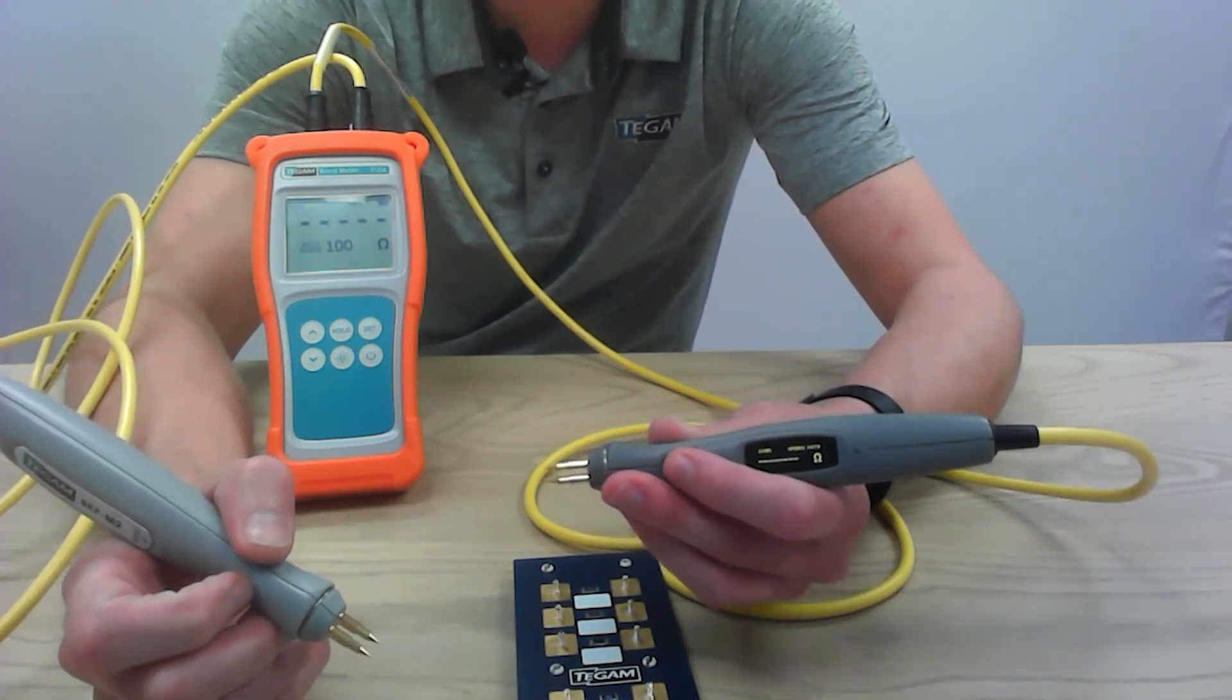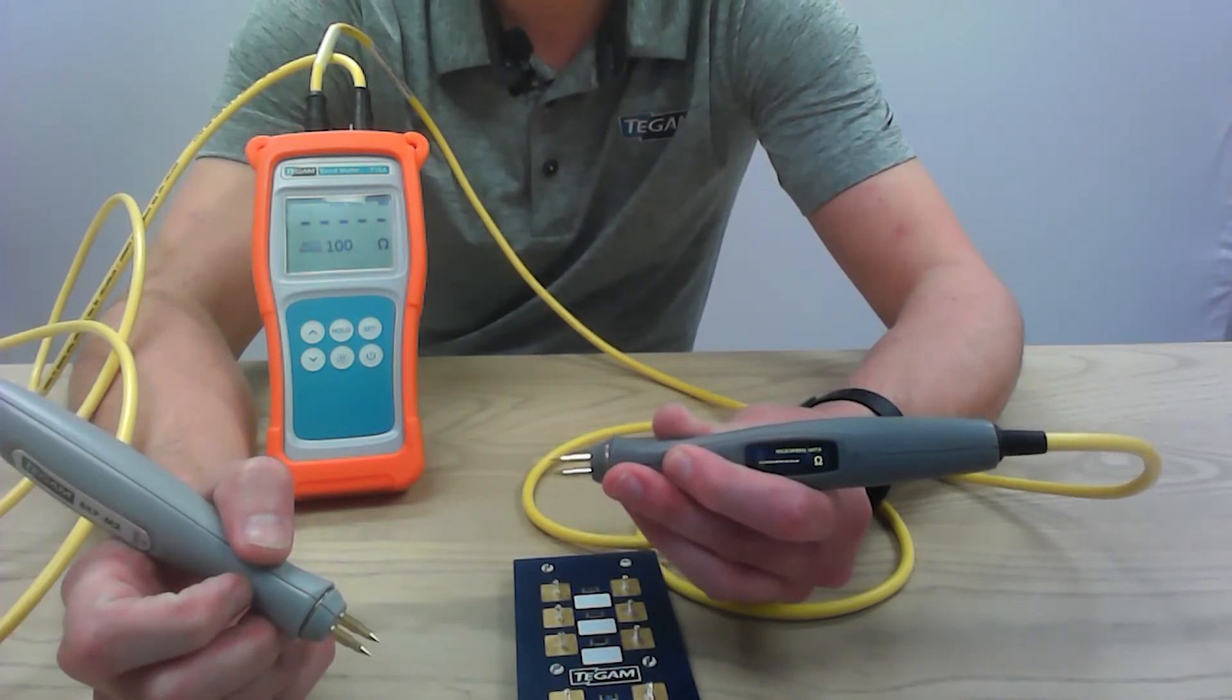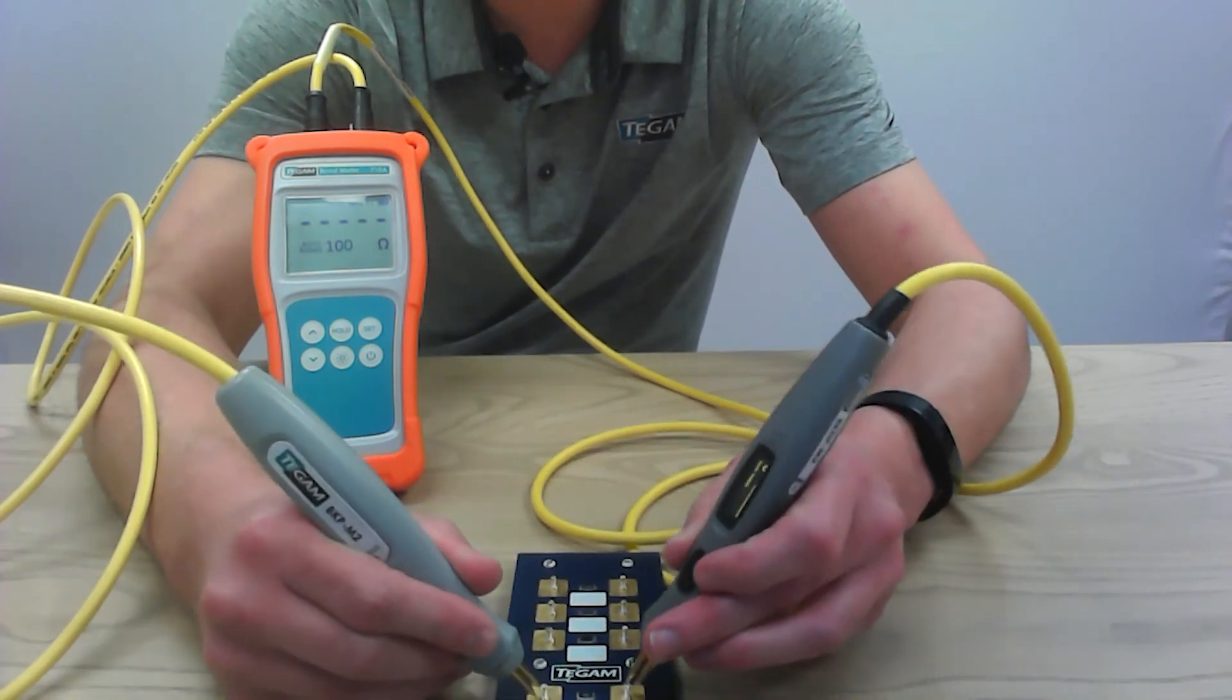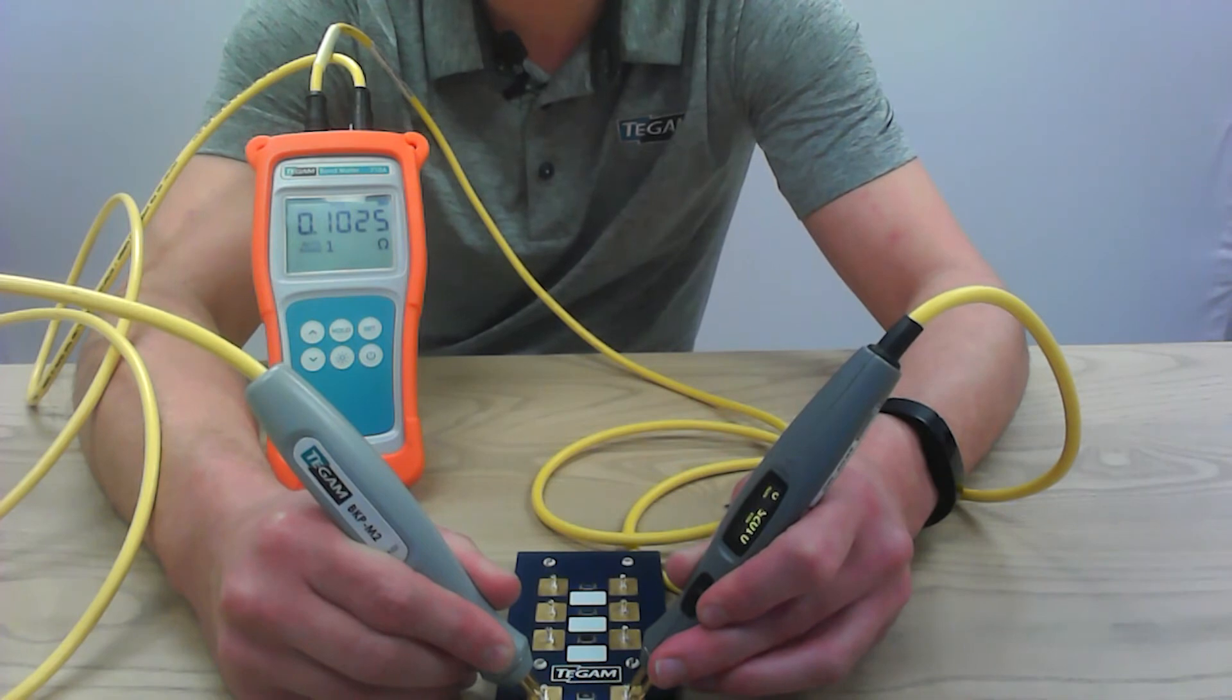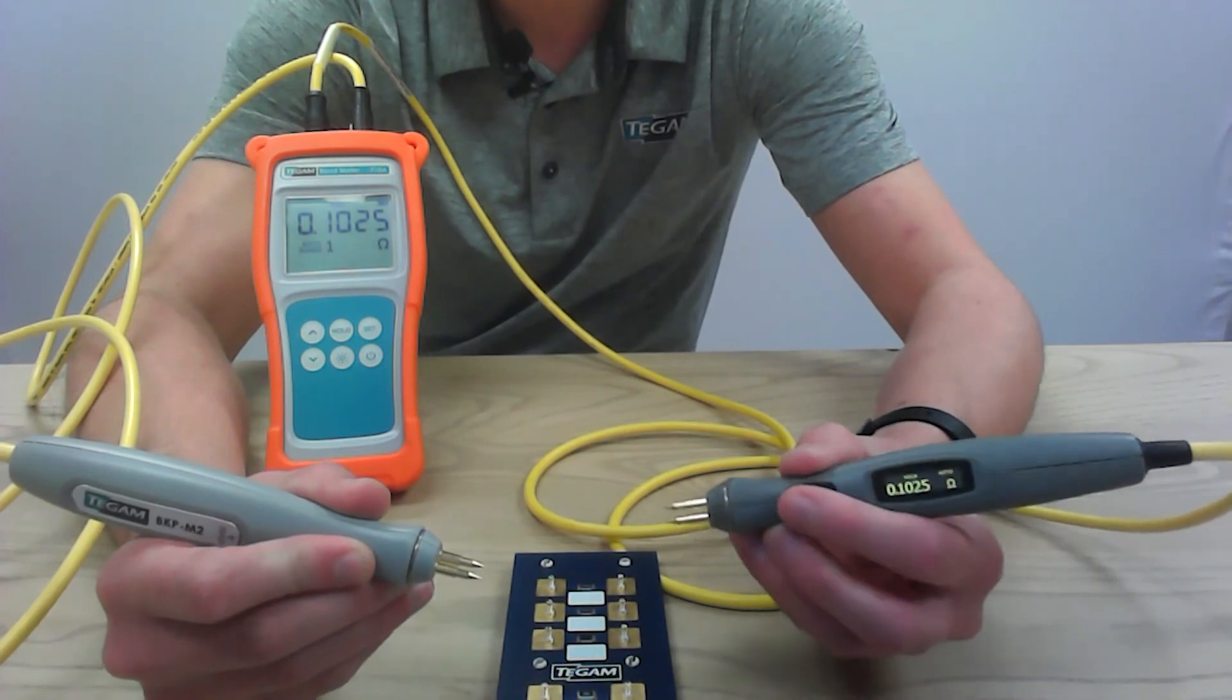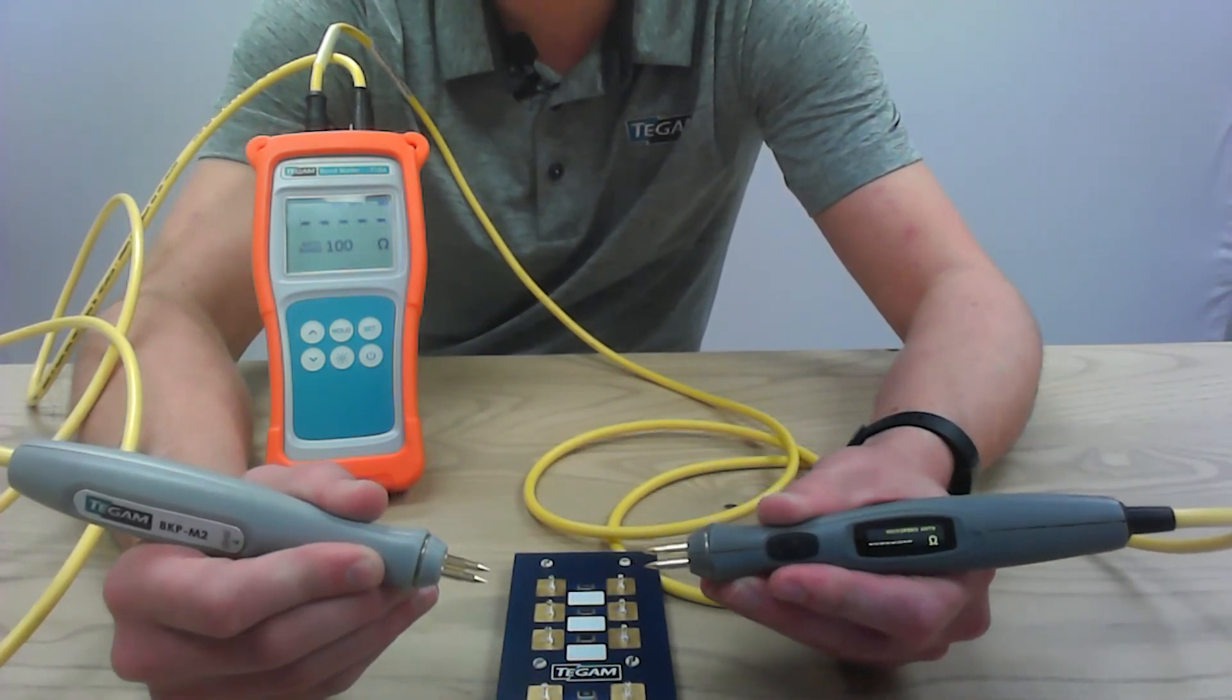To use the 710A's auto hold feature, hold down the button. The hold button will begin to flash, and now you can take your measurement. It will determine a stable reading. Once you get the stable reading, it is automatically held until you press the button again to get it ready for another reading.